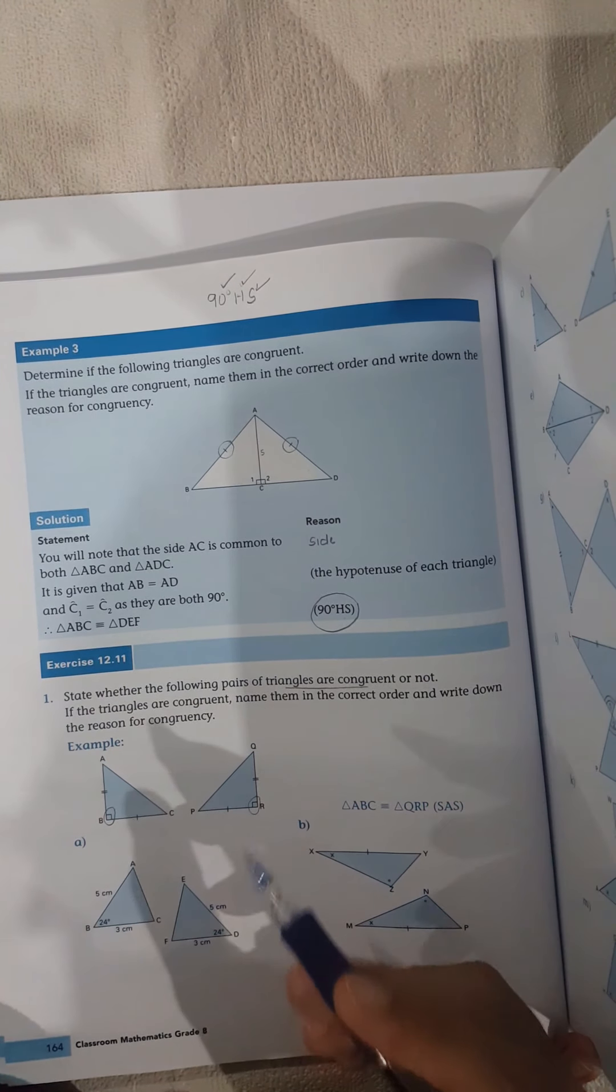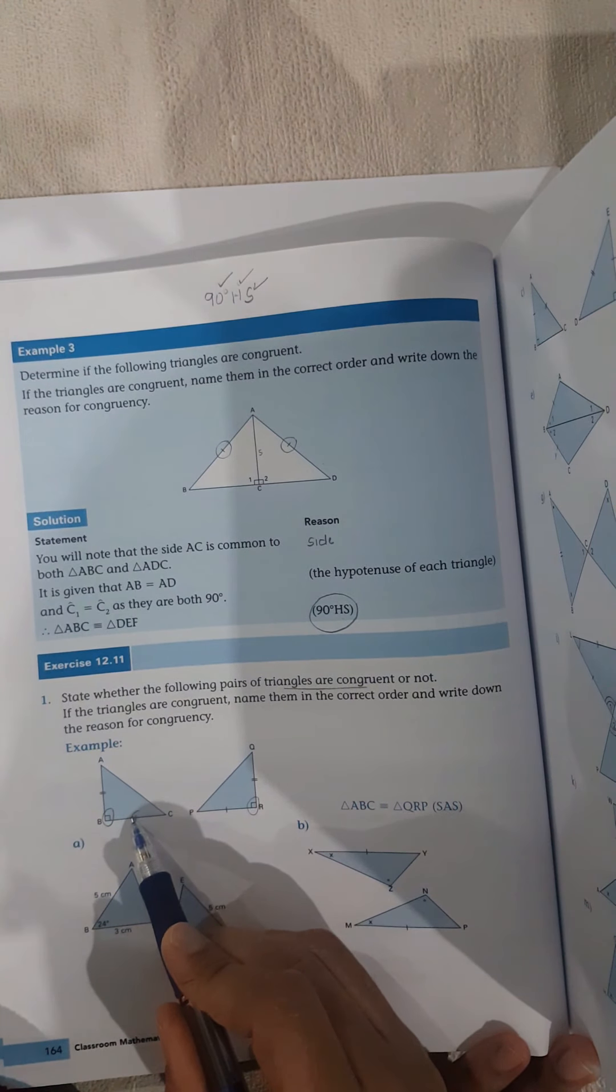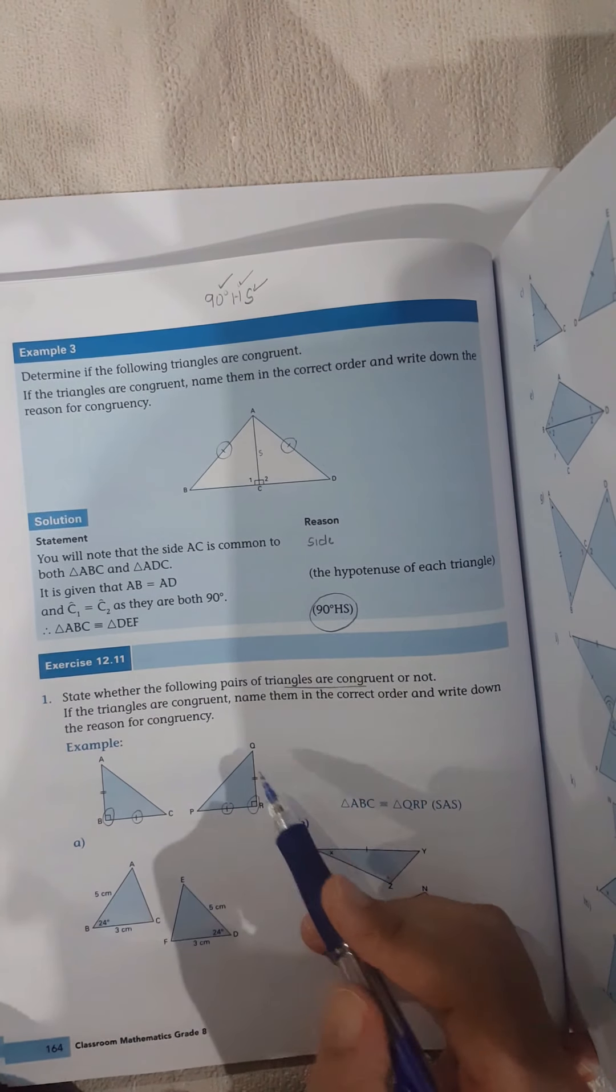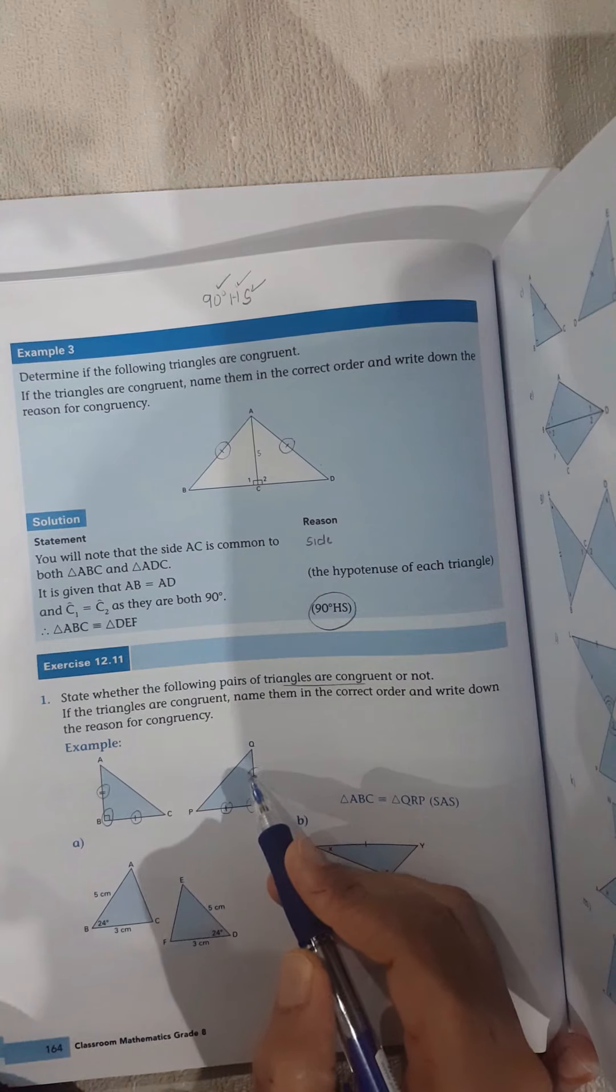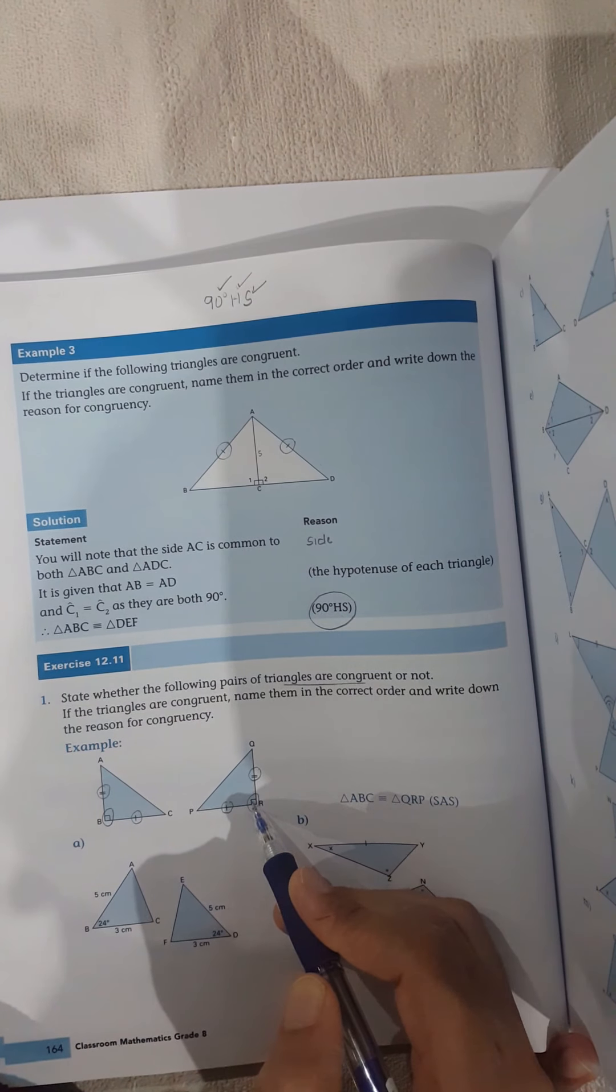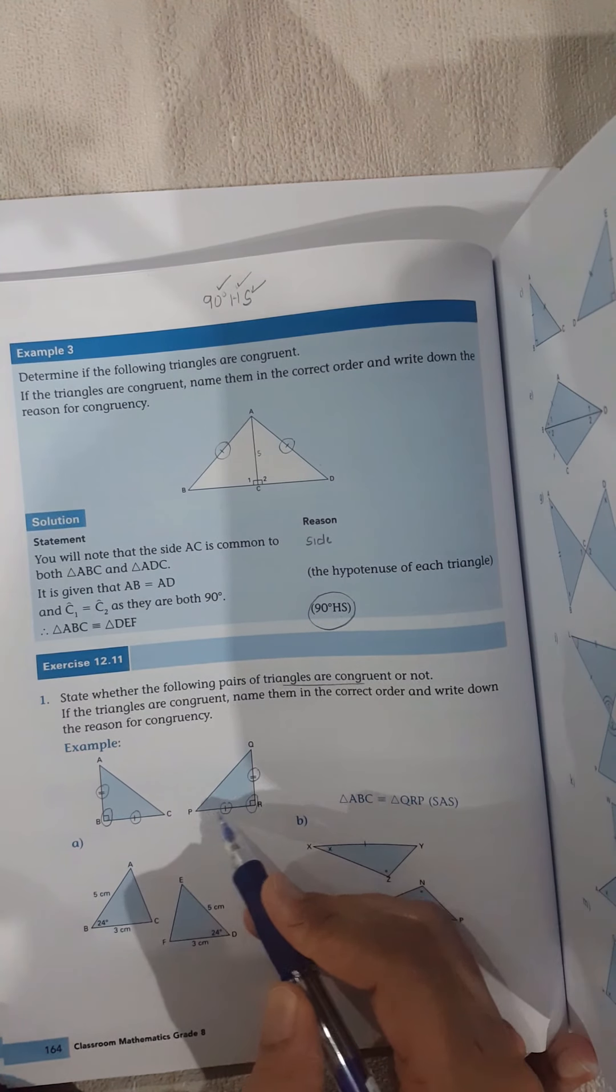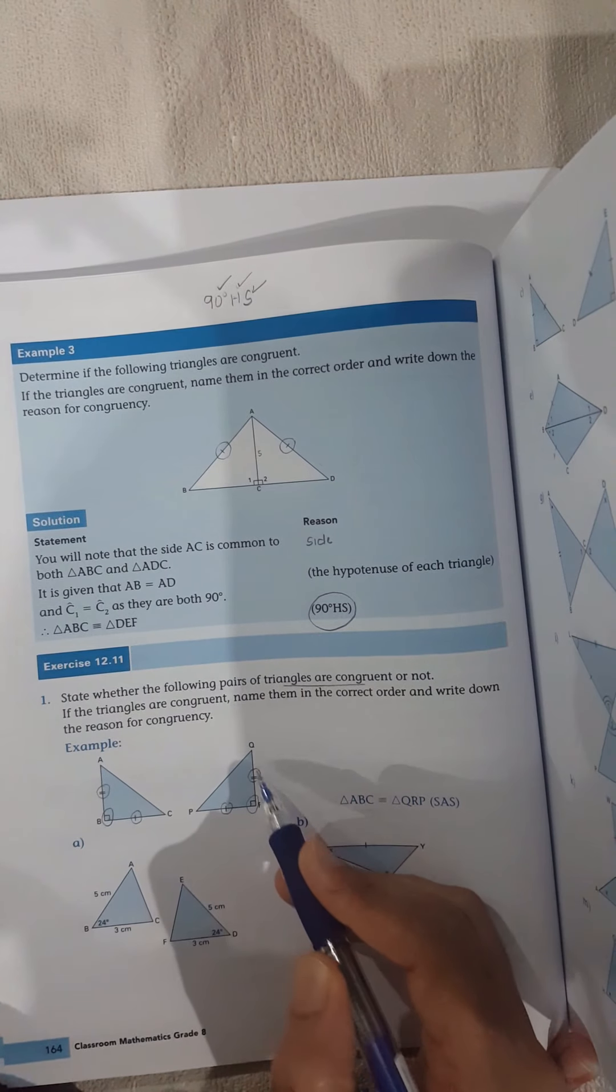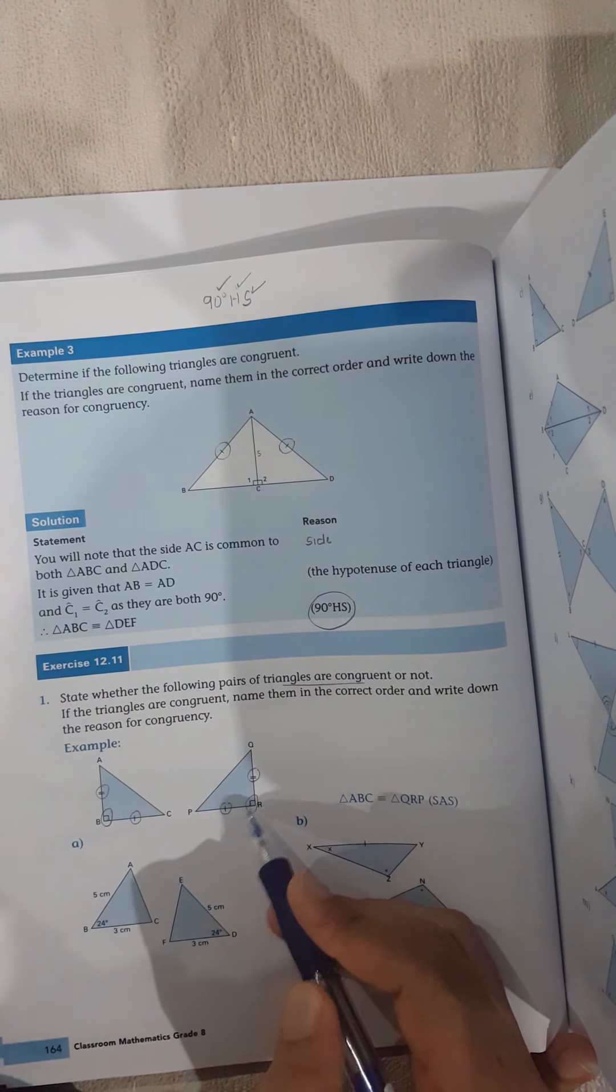Okay. So BC is equals to PR. Look, it's matching there. So I've got one angle that's equal and two sides that are equal. And can you see it's the included angle here? Can you see the two sides and the angle is in the middle and the two sides and the angle in the middle? It doesn't matter that it's 90 degrees. It's still equal.